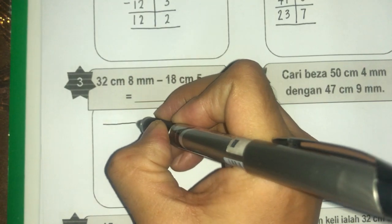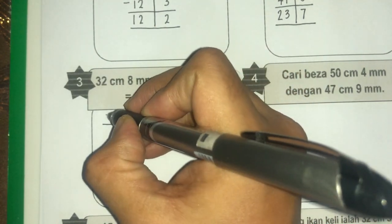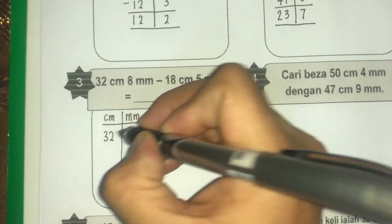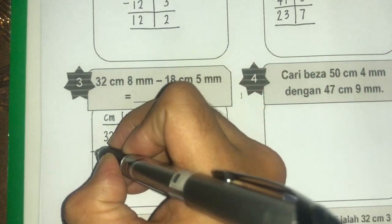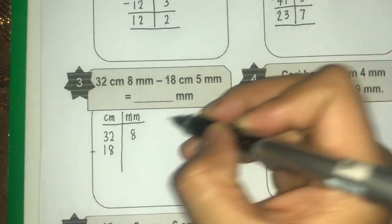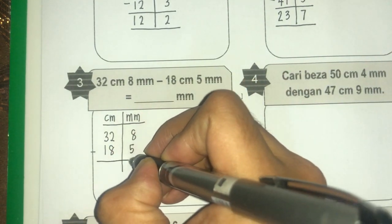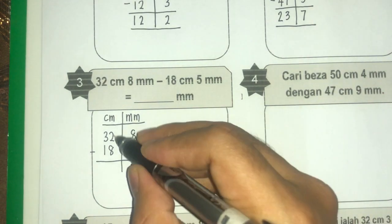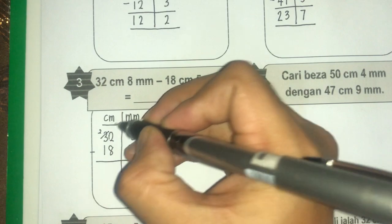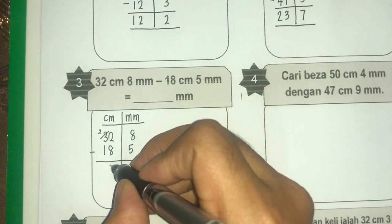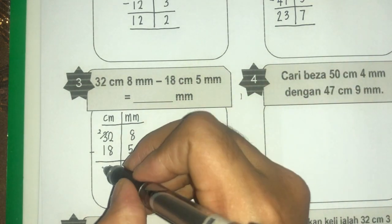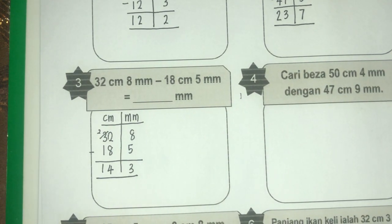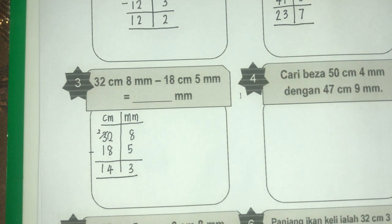Kita buat dulu langkah yang pertama. Tuliskan 32, 8. Tolak 18, 5. Kita tolak seperti biasa: 8 tolak 5 dapat 3. 2 tolak 8 tak boleh — pinjam, sini jadi 2, sini jadi 12. 12 tolak 8 dapat 4. 2 tolak 1 dapat 1. Kita dapat jawapan 14 cm, 3 mm.